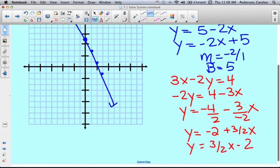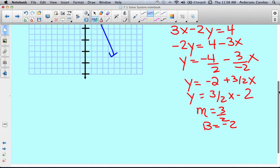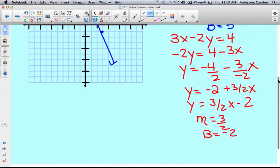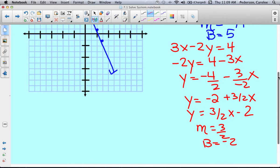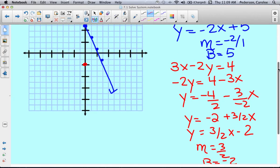So now let's come over and graph it. Slope is 3 halves, y-intercept is negative 2. So here's my y-intercept of negative 2. And I'm going to rise 3 and run 2. So rise 3 and run 2. And there is my red line.